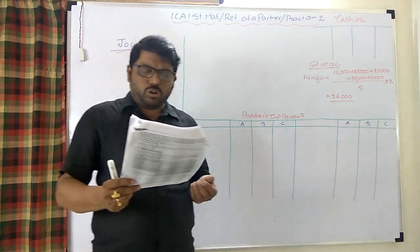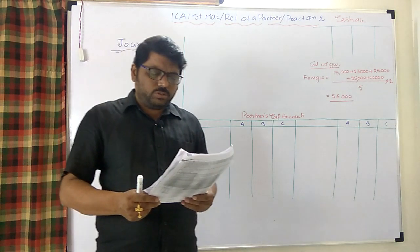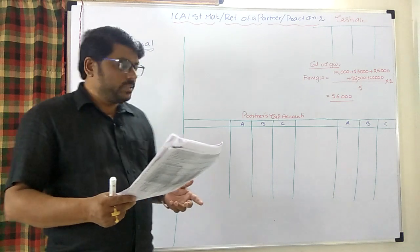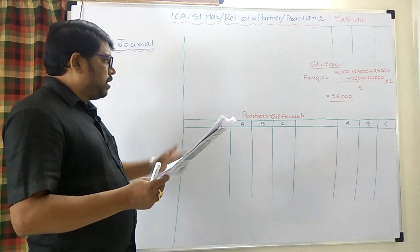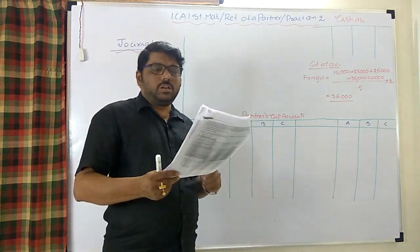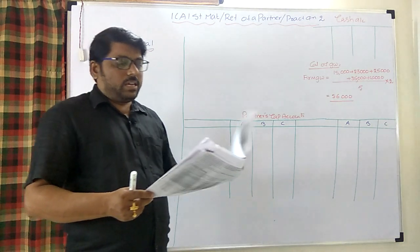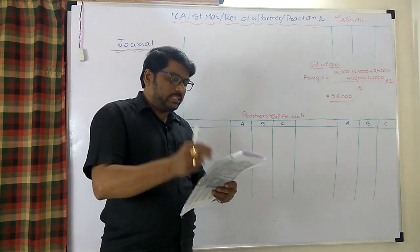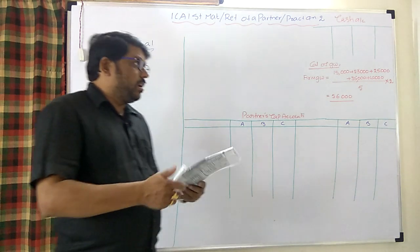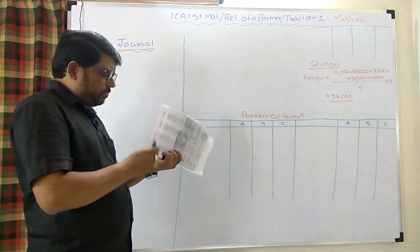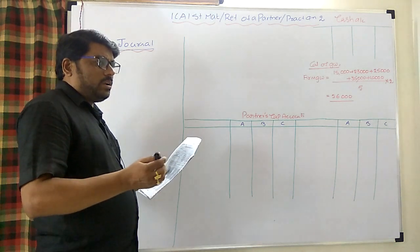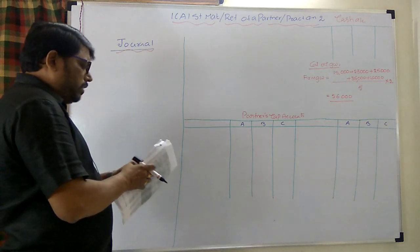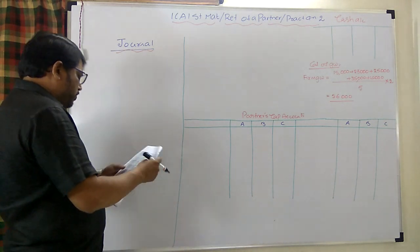Partners are required to bring in any shortfall or withdraw any excess capital. We need to give the necessary entries, prepare partners' capital accounts, cash account, and balance sheet of B and C. Let us begin with the journal entries. The 42,000 profit already shared must first be reversed.